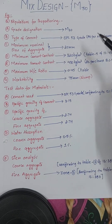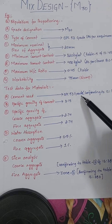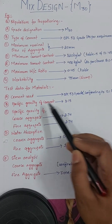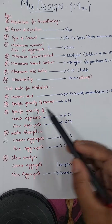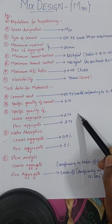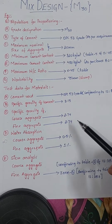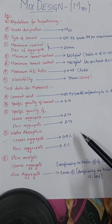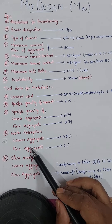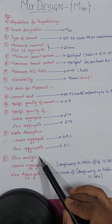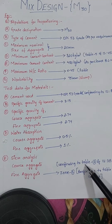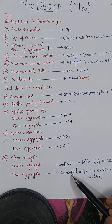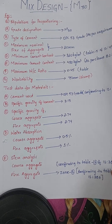The cement used is OPC 53 grade confirming to IS 112. Specific gravity of cement is 3.15, specific gravity of coarse aggregate is 2.74, specific gravity of fine aggregate is 2.74, water absorption for coarse aggregate is 0.5%, and for fine aggregate it is 1%. Sieve analysis for coarse aggregate is taken from table 2 of IS 383, and fine aggregate is zone 2 conforming to IS 383.